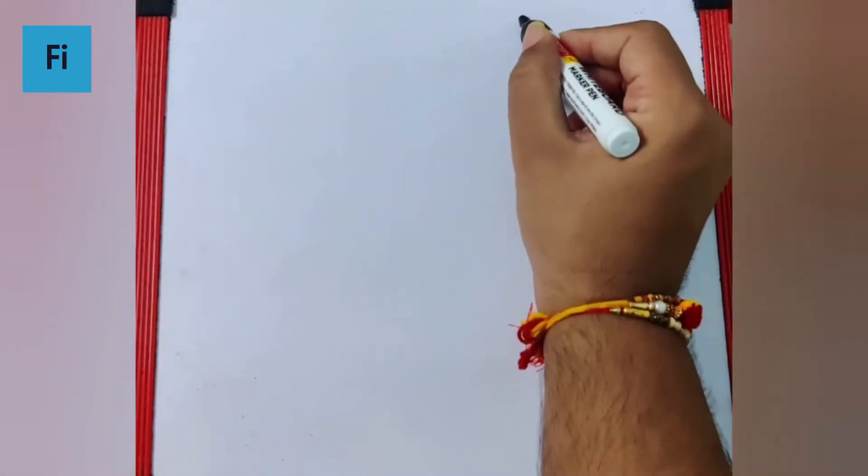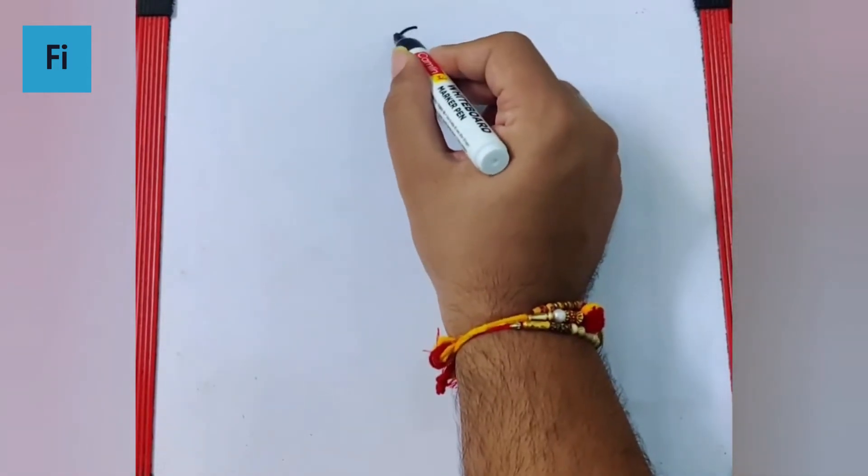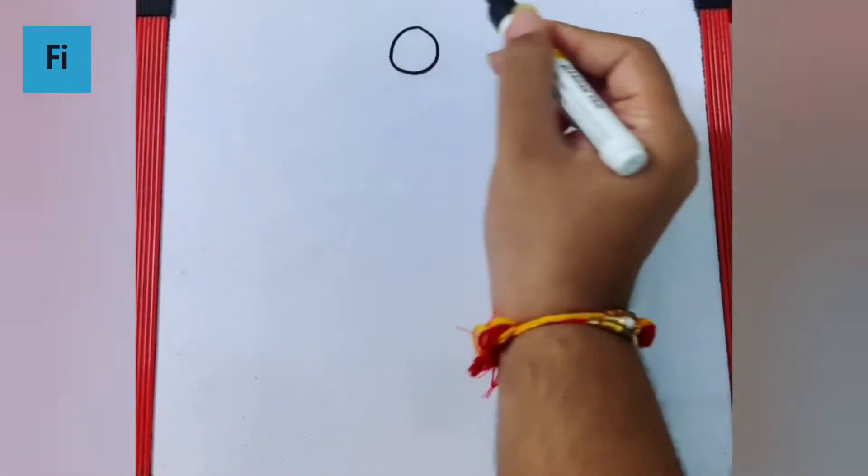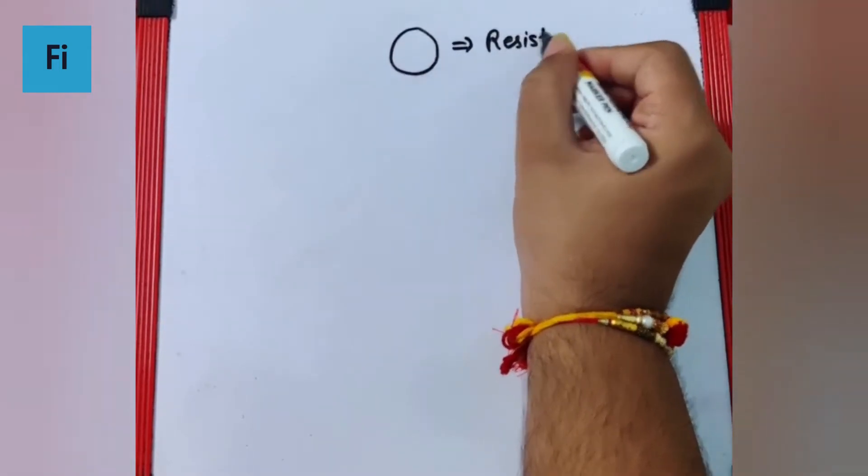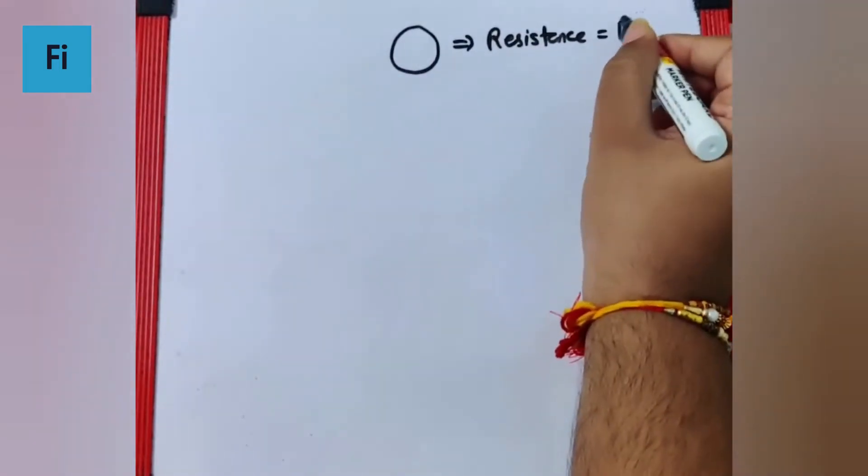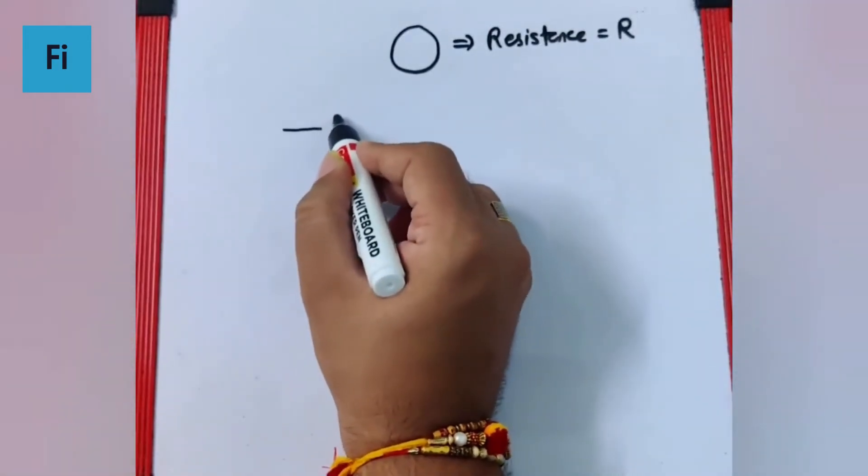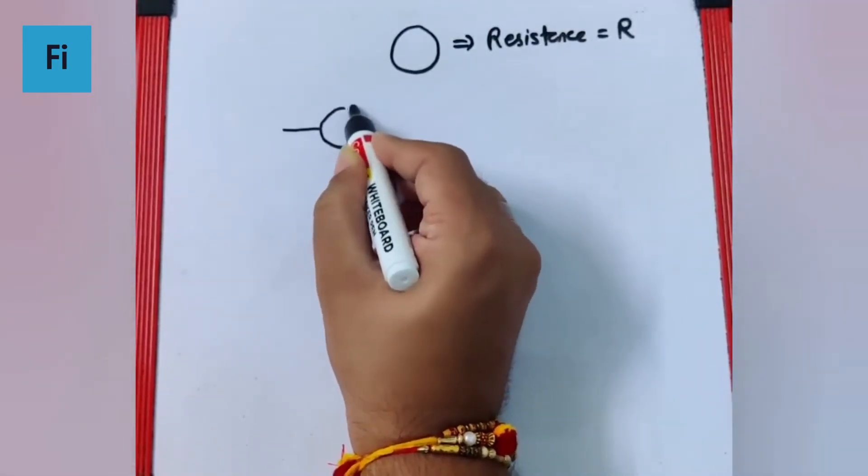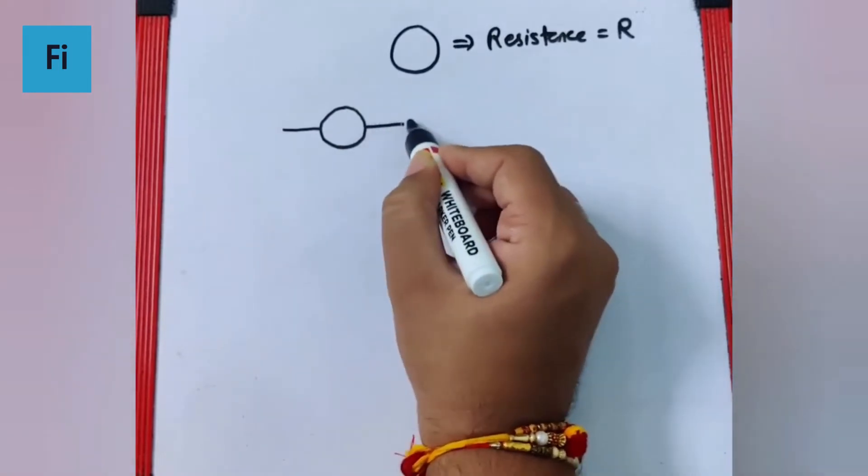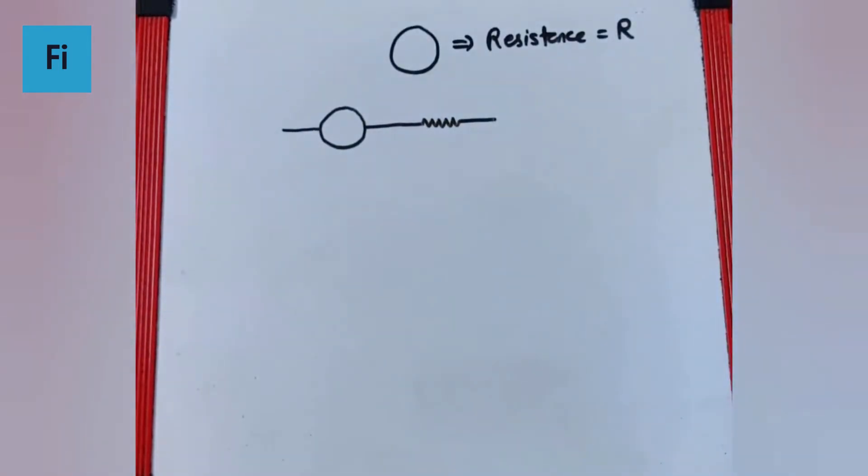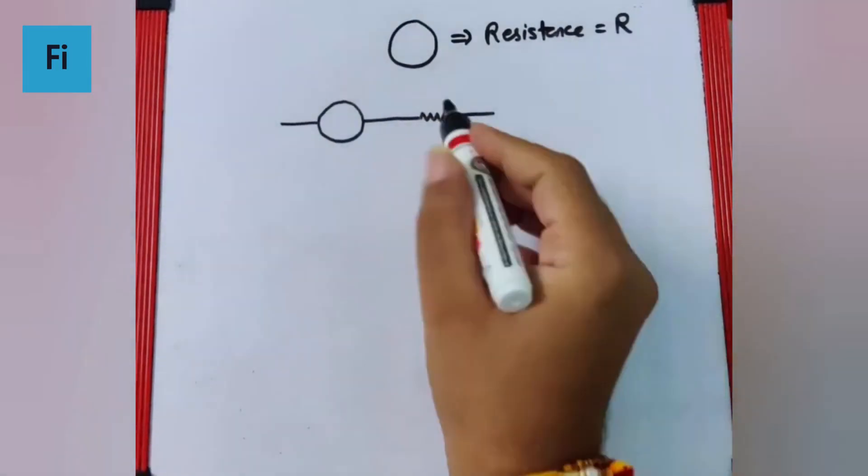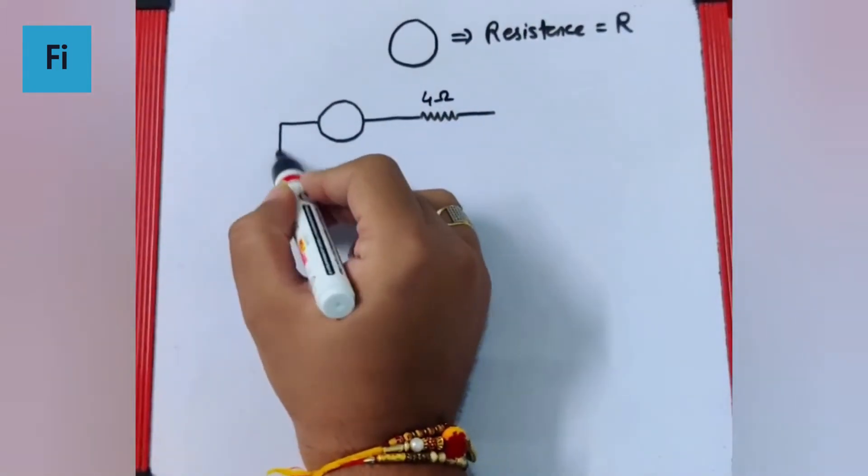Now please understand, if I say that this is the bangle for which the resistance is R, then if I connect it like this with 4 ohm in series, so this is 4 ohm such that...